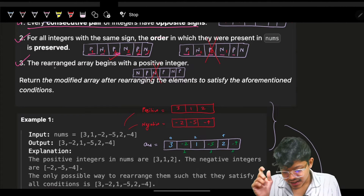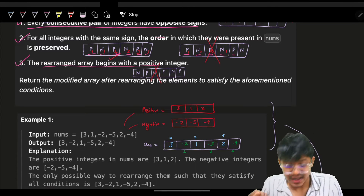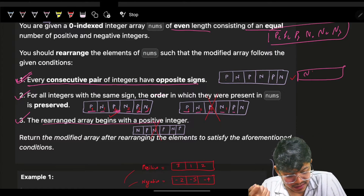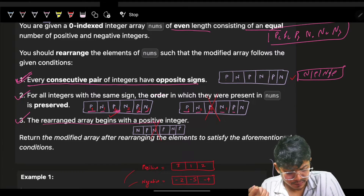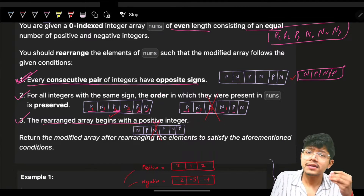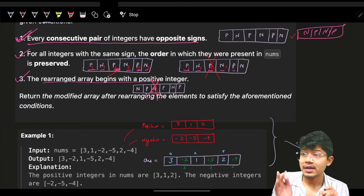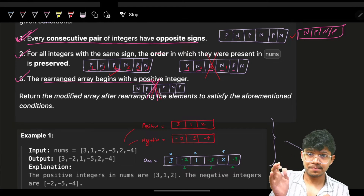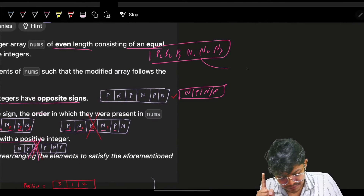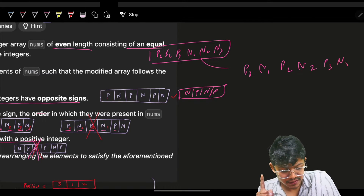The third condition is that the rearranged array must begin with a positive integer. So we cannot begin with a negative. Combining all three conditions, it ultimately boils down to one pattern: positive, negative, positive, negative, and so on — always starting with positive.